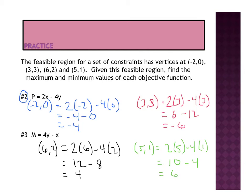So it looks like we'll have this here is our maximum. So given the feasible region, find the maximum and minimum values for each objective function. So our answer will be 6 for our max and -6 for our min.